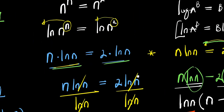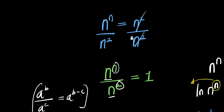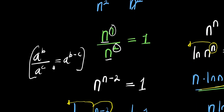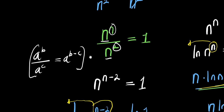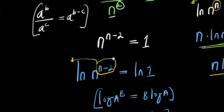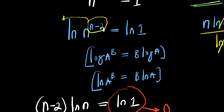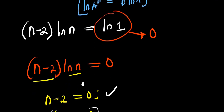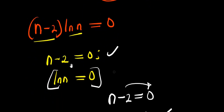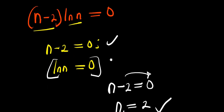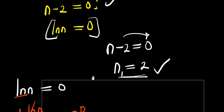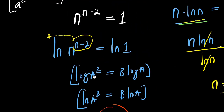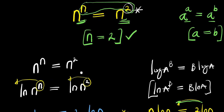The second method is to divide both sides by n power 2, apply the identity a power b divided by a power c equals a power b minus c, then apply natural log. The exponent (n minus 2) comes in front, and natural log of 1 is zero. This again gives two equations — n minus 2 equals 0 and natural log of n equals 0 — with the same two solutions.